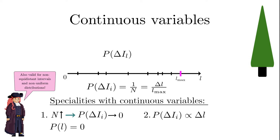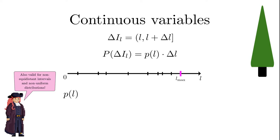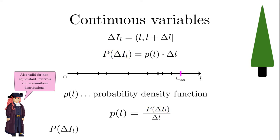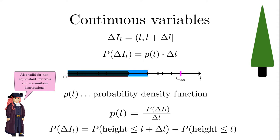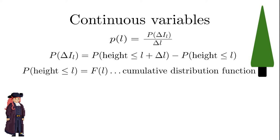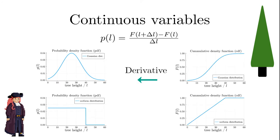In general, the probability that the height of a tree lies in a certain interval is proportional to the length of that interval. The proportionality function is the probability density — it is the probability to find a tree with length in the interval from L to L plus delta L, divided by the interval length. The probability can also be obtained from the difference of the cumulative distribution function (CDF) evaluated at L plus delta L minus that at L. For infinitesimal interval lengths, the PDF turns into the derivative of the CDF, and in turn the CDF is the integral of the PDF. That explains why it is called cumulative.